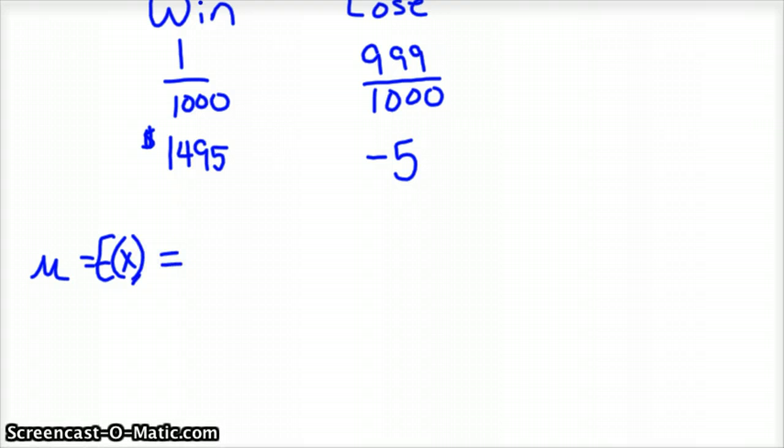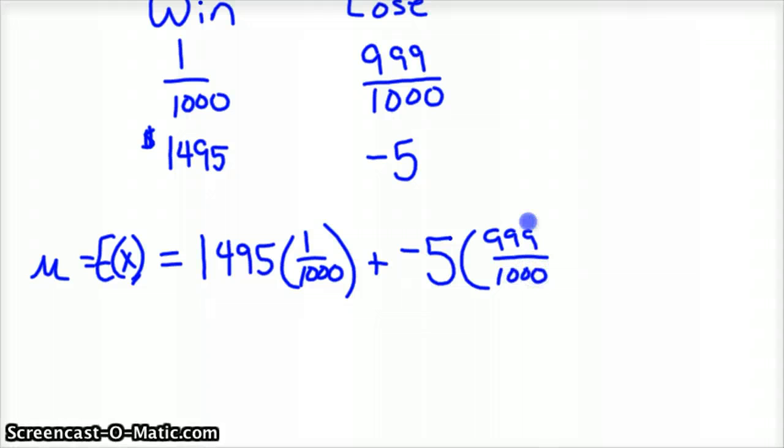E of X equals $1,495 times 1 over 1,000, plus a negative 5 times 999 out of 1,000 losers. $1,495 times 1 over 1,000 plus negative 5 times 999 divided by 1,000 gives you a negative $3.50 loss.